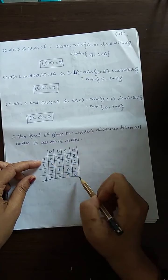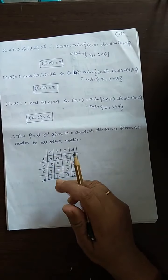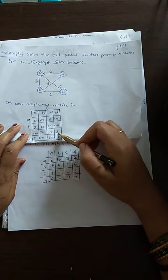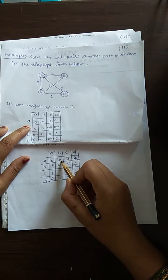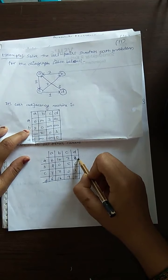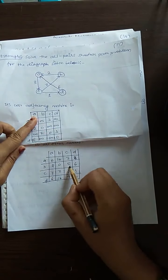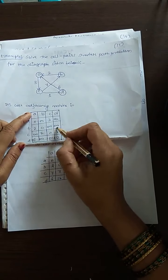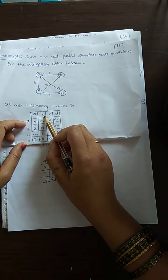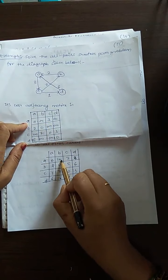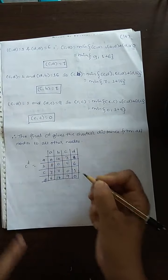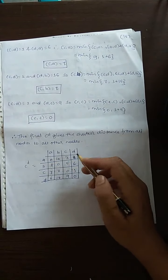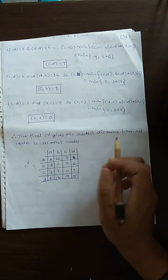Finally, in the C^D matrix we have the all pair shortest path result. I to I is always 0. Values that were infinity in the initial cost adjacency matrix have been updated: A to B is now 10, A to D is now 4, B to C is now 5. This final updated matrix, C^D, is the shortest path from all vertices to all other vertices. This is how we solve Floyd's algorithm.